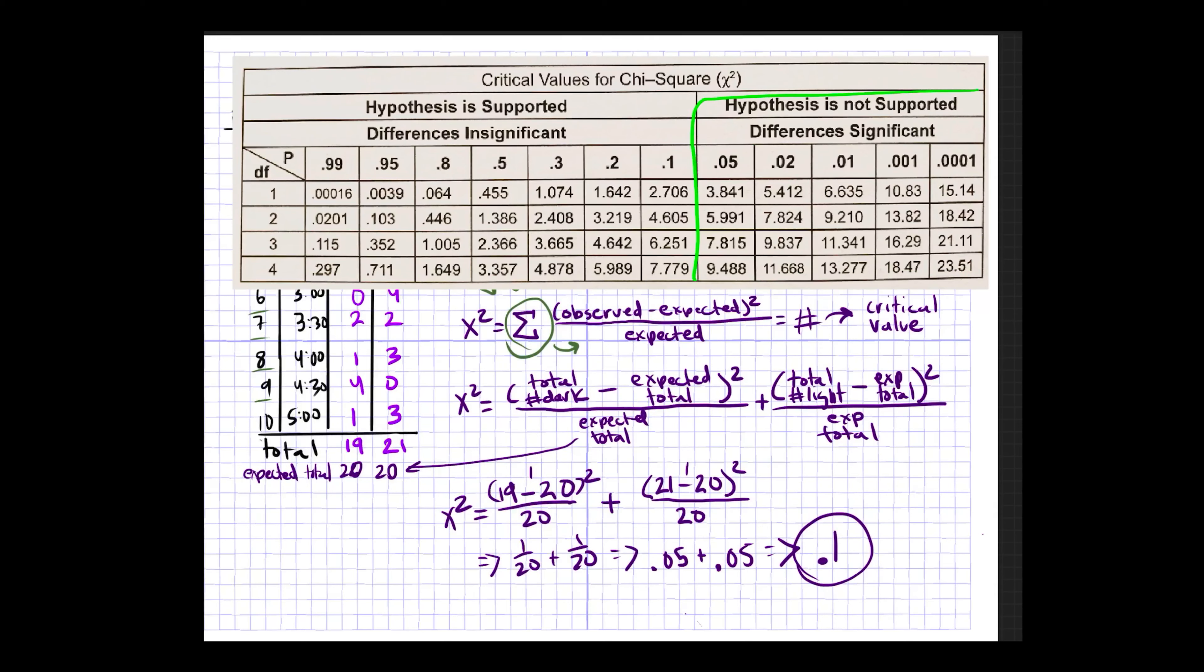If you find your critical value in this range, well, that would suggest that your null hypothesis is not supported. That is, the differences are not due to chance. If the differences are significant, that would support your alternative hypothesis. In this case, it would be geckos prefer to rest on a darker substrate.